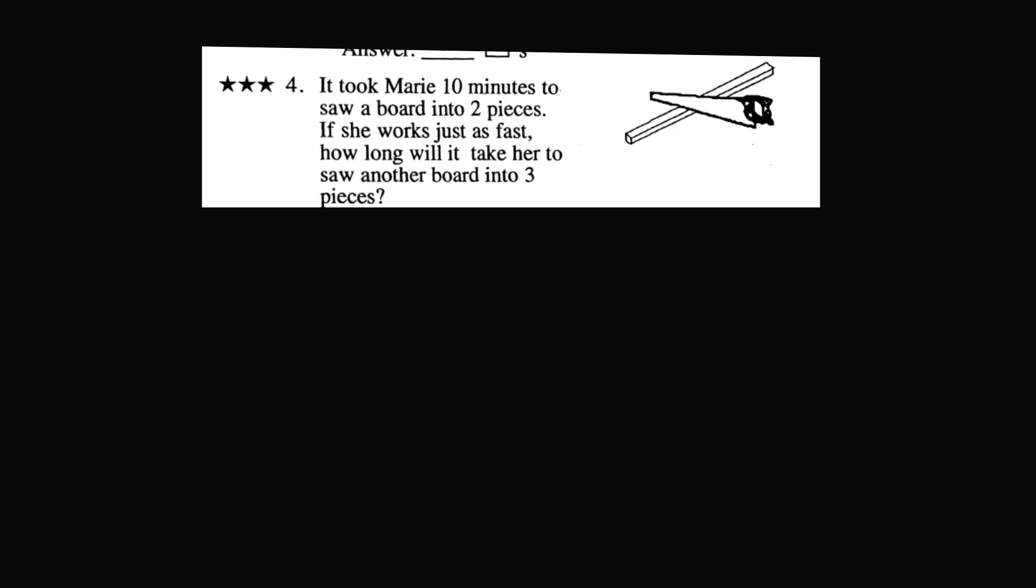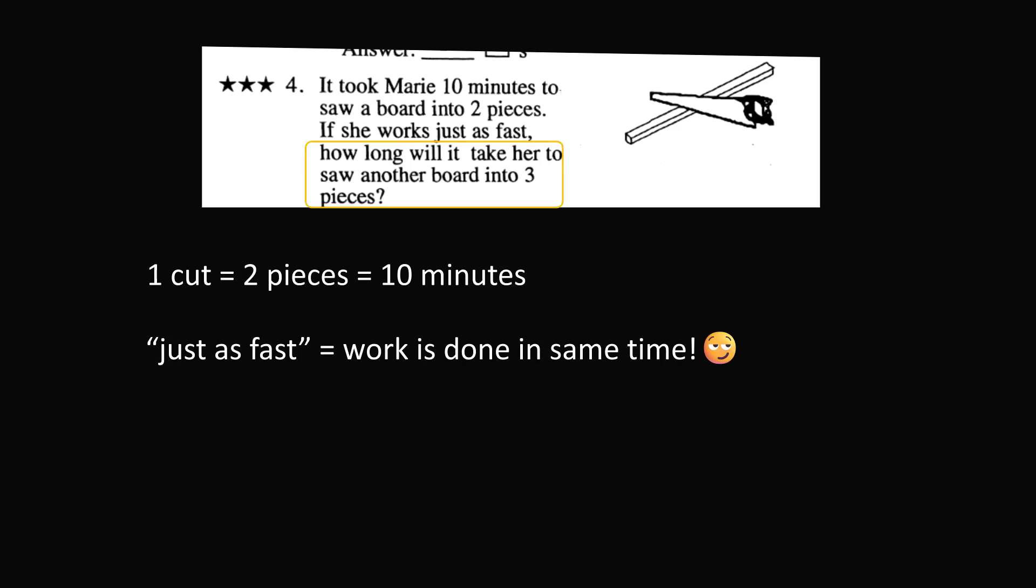But there's always a smart alec student in the class. Let's look at the question: it took Marie 10 minutes to saw a board into two pieces. So this job took 10 minutes. The next sentence, if she works just as fast, what does that mean? Does that mean the rate of her work is just as fast, or it means she completes the work just as fast? So you could interpret this as saying, Marie completes the same job just as fast as the first job. So the work is done in the same amount of time. So the correct answer by this interpretation is it will just take the same amount of time. Therefore, the amount of time it takes will be exactly the same 10 minutes as before. And it takes 10 minutes.